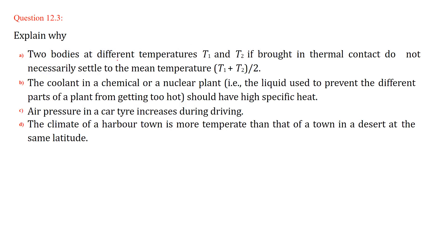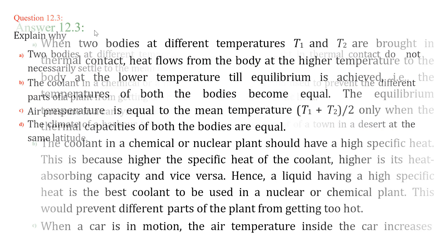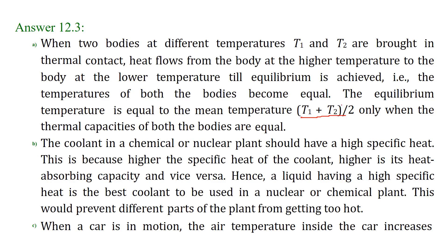Why do two bodies at different temperatures T1 and T2, when brought into thermal contact, not necessarily settle to the mean temperature (T1 + T2)/2? It is not always true that the final temperature is exactly the average. Heat flows from the higher temperature body to the lower temperature body until equilibrium is reached. The mean temperature is only achieved when the thermal capacities of both bodies are equal.